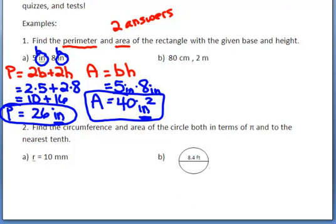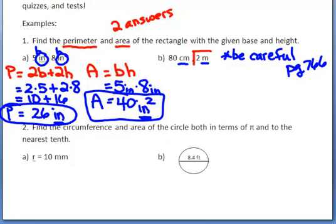For example B, be very careful — one label is in centimeters and the other is in meters. We cannot do this problem with different labels, so we have to convert. If you don't know how to convert, look on page 766 of your textbook for conversion factors. I choose to convert the bigger unit into smaller ones: there are 100 centimeters in a meter, so 2 meters equals 200 centimeters.